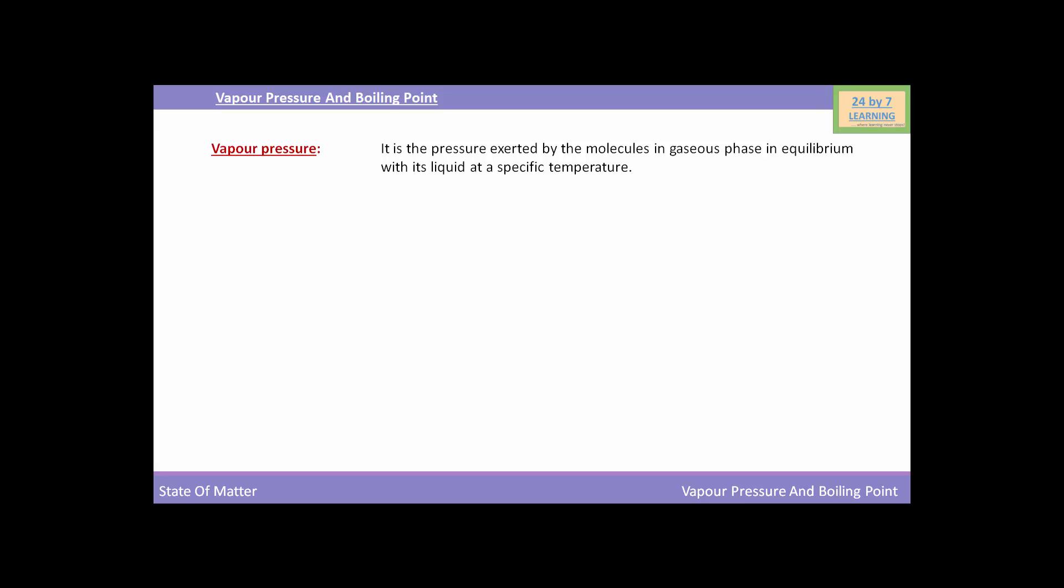Due to evaporation, liquid changes into vapours and the level of liquid decreases. After some time, the level of liquid does not change further and becomes constant, because at the final stage, the rate of evaporation becomes equal to the rate of condensation.